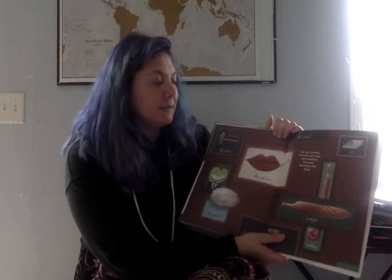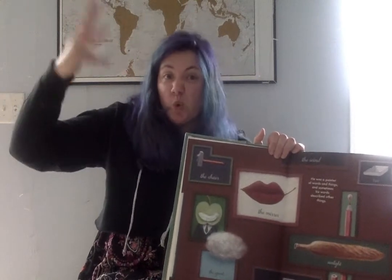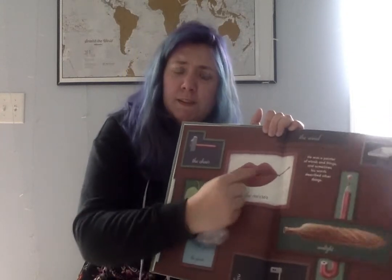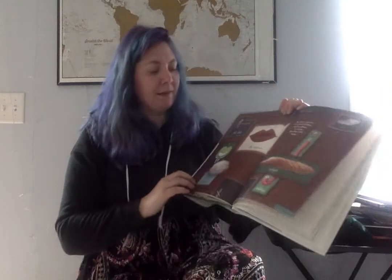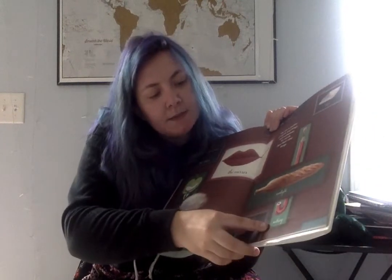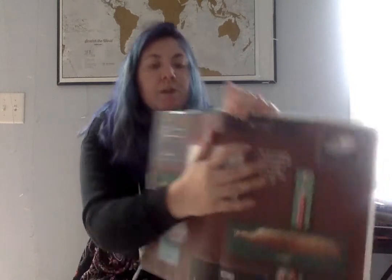He was a painter of words and things and sometimes his words described other things. This is like an anvil — usually used to make swords — and it says 'the chair.' This leaf is called 'the mirror,' but it kind of looks like a mouth. This is a cloud and it's called 'the giant.' This is a door down here and it says 'night.' This looks like half a bottle and half bread and it's called 'sunlight.' This looks like a pencil rounded out like an umbrella and this one says 'nothing.' On top here looks like a book called 'tree,' and up here it says 'the wind' and it's just black. How cool is that? So he's very imaginative.